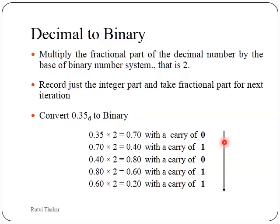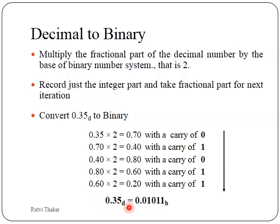The recording of the carry is from top to bottom. We don't have to take it in reverse order as in the integer part — we have to take it from top to bottom. So the answer: 0.35 decimal is equivalent to 0.01011 in binary.